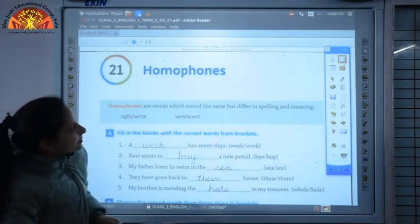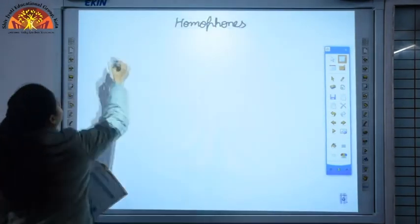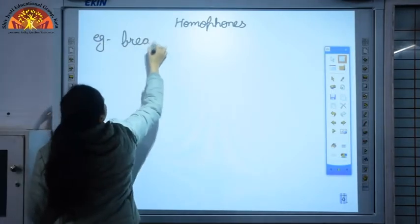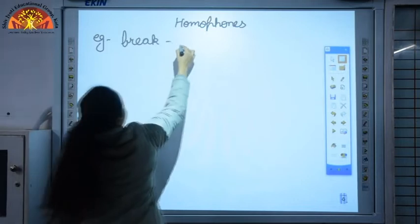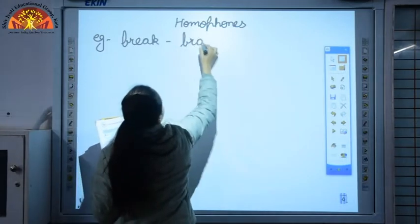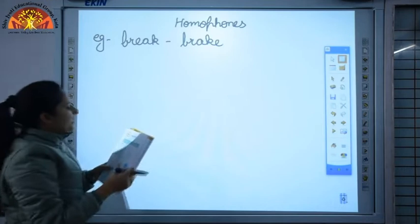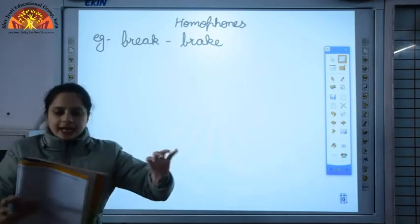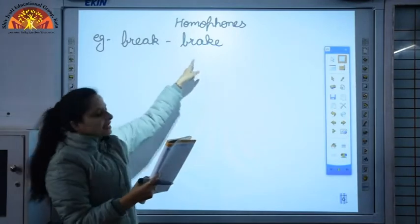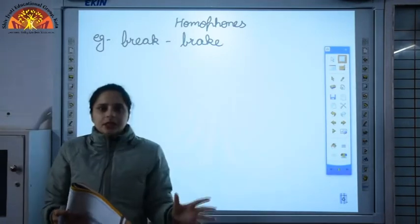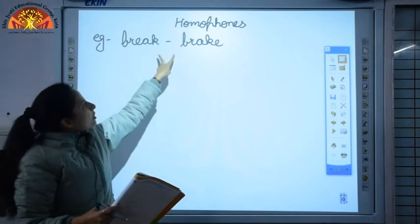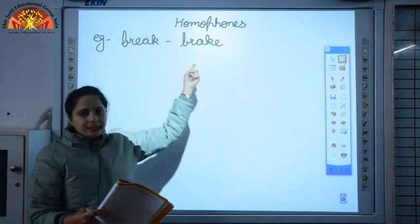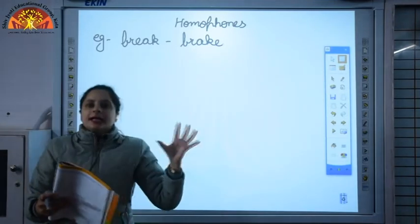Now let's look into some examples. For example, break and brake. Now this break is used to separate parts, and over here this brake is used as a part of a vehicle. The sound of these two words is same but the spelling and the meaning is different.